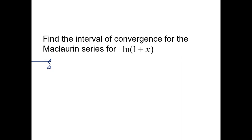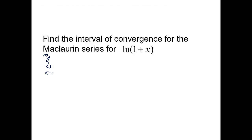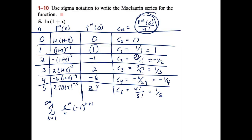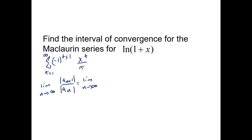To find the interval of convergence, use the ratio test: take the limit as n→∞ of |a_{n+1}/a_n|. The (-1)^(k+1) factor vanishes under absolute value. We get the limit of |x^(k+1)/(k+1)| · |k/x^k|, which simplifies to |x| · (k/(k+1)). As k→∞, that limit equals |x|.